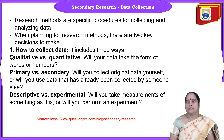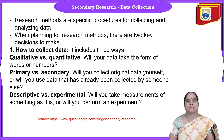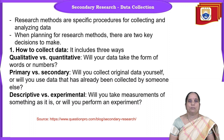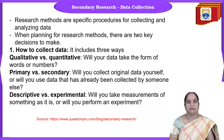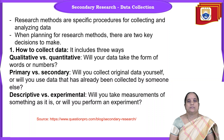Before going to enter into a research study, we need to have some type of information, which is known as data collection. So research methods are specific procedures for collecting and analyzing the data. Unless and until you don't have the data collection related to the problem, it becomes very difficult to find out the solution. Whenever we are planning for research methods, we need to have two types of decisions: how to collect the data and how to analyze the data. There are three types of data collection. We should understand whether it is qualitative or quantitative data, primary or secondary data, or descriptive or experimental. Based on the type of research, we need to find out the appropriate data collection methods.